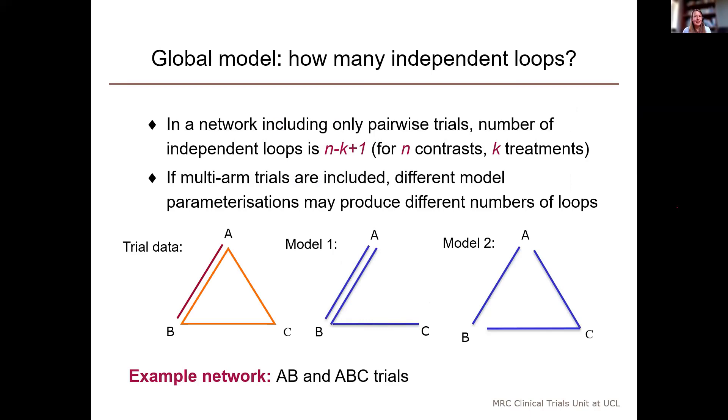When there are multiple loops in a network, we want to extend the model to a global model, which includes one inconsistency term for each independent loop. And as I mentioned earlier, if the network only includes pairwise trials, then the number of independent loops is fixed and we can calculate it using this formula that I showed earlier. But if the network also includes multi-arm trials covering comparisons that aren't evaluated in any pairwise trials, then counting the number of loops becomes more complicated.